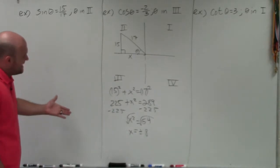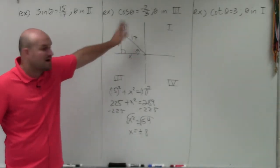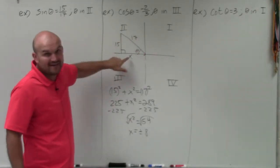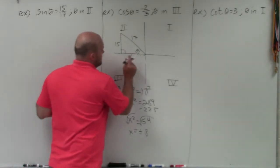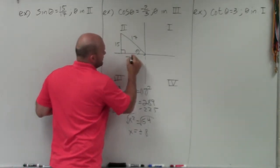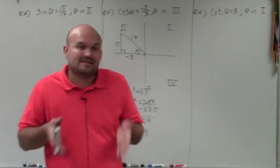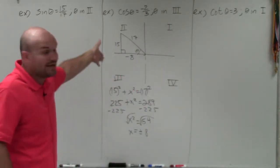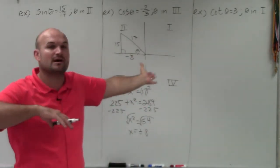Well, so we have plus or minus 8. But if you look at this, in the second quadrant we know that this has to be a negative 8, right? So x has to equal negative 8. So now we can evaluate. So now that we know what our triangle looks like, now it's just like the previous video I made. Now we just evaluate for sine, cosine, and tangent for the double angle.